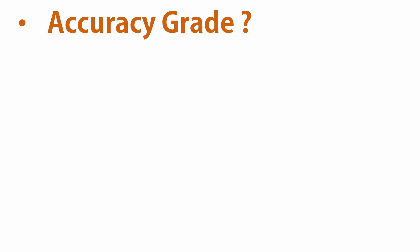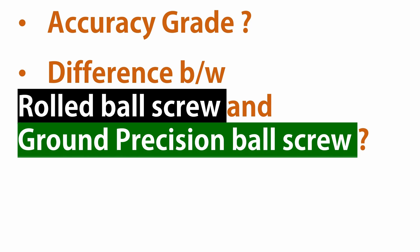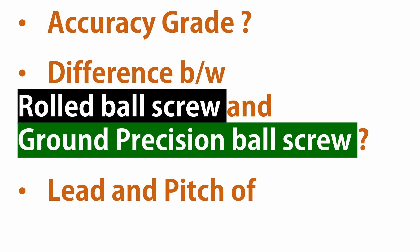We'll cover what the accuracy grade is, the difference between rolled and precision ground ball screws, and the difference between lead and pitch of a ball screw, which we discussed in part one but will go into more depth here. I'll define each term at the appropriate point in the selection procedure so the flow stays clear. If you are already aware of common ball screw terms, you can skip this chapter and start directly from the selection chapter using the chapter slider.